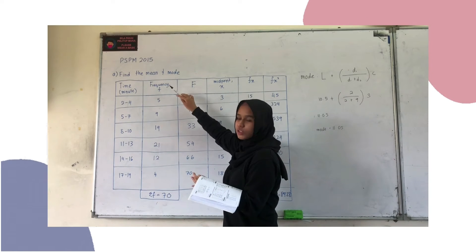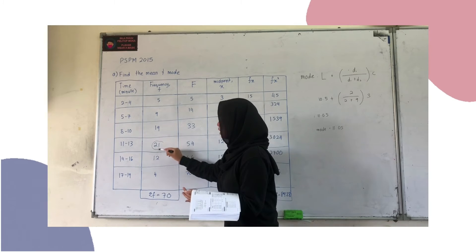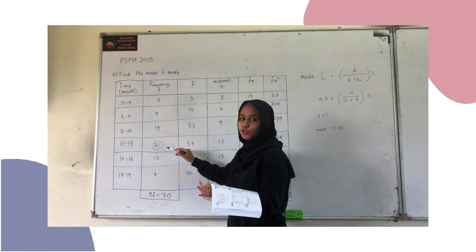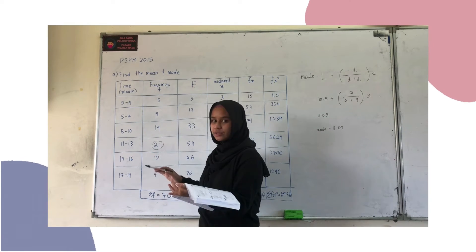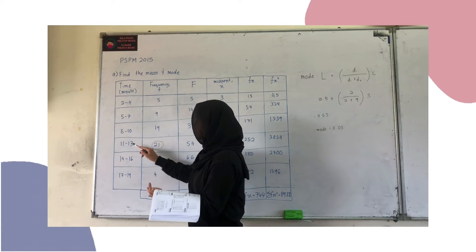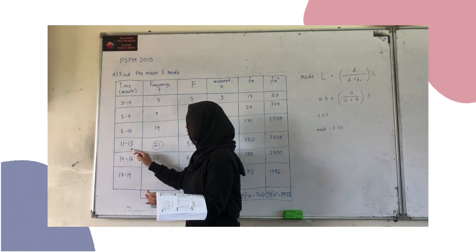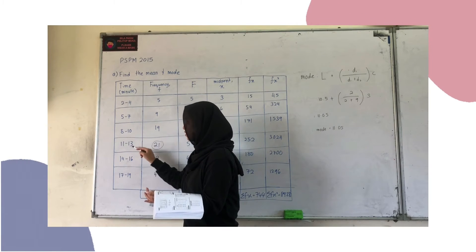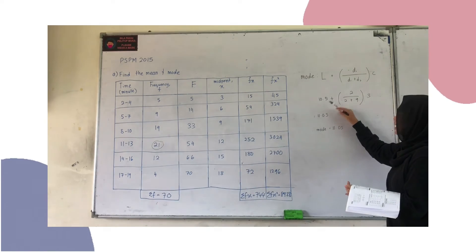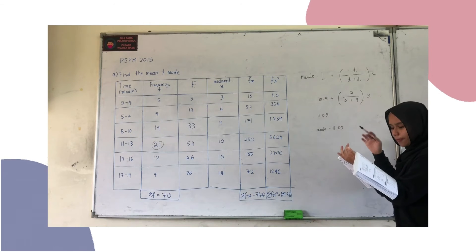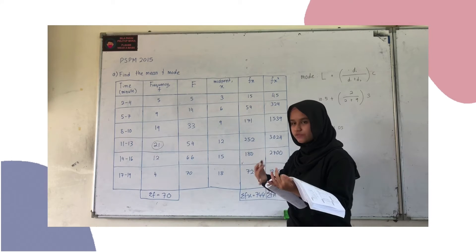The highest frequency identifies the mode class. The lower boundary of that class is 10.5, so L equals 10.5. D1 is the difference between the frequency of the mode class and the frequency of the previous class.